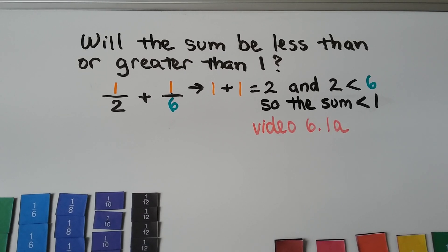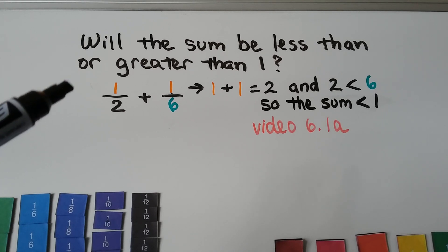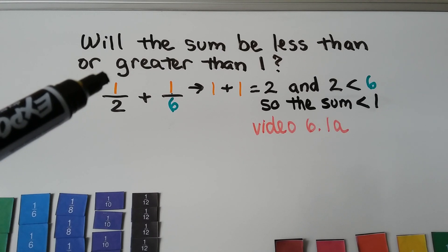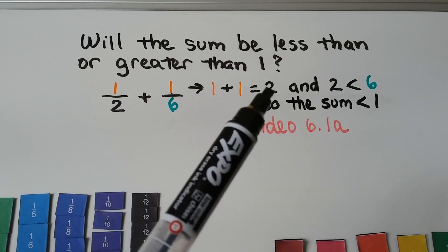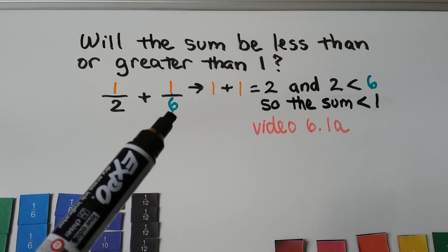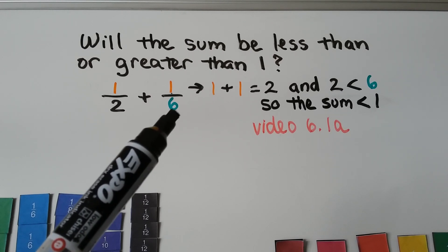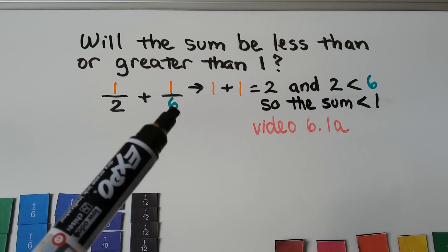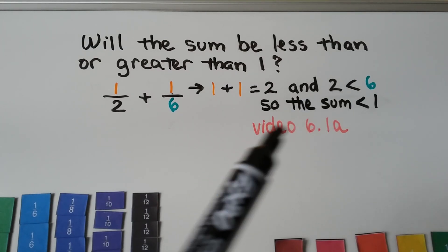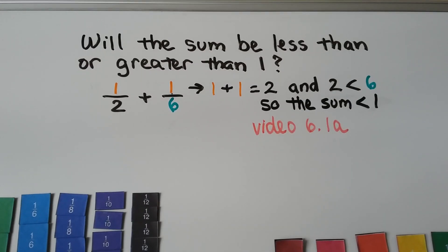As we learned in video 6.1a, will the sum be less than or greater than one? We add the numerators together — here we have 1 plus 1, that's 2 — and we compare it to the largest number in the denominator. The largest number is 6, and 2 is less than 6, so we know the sum is going to be less than 1.